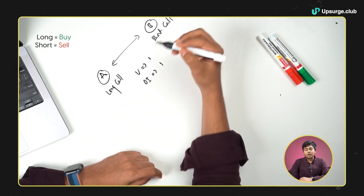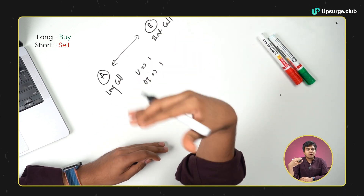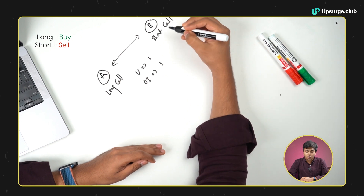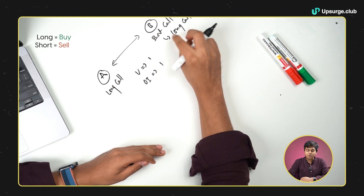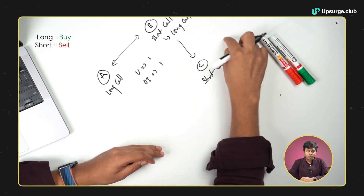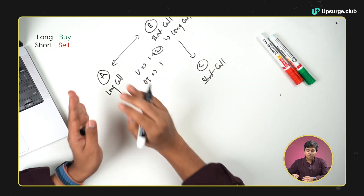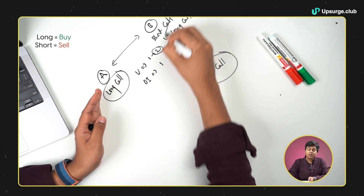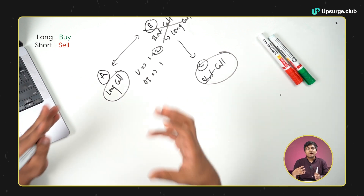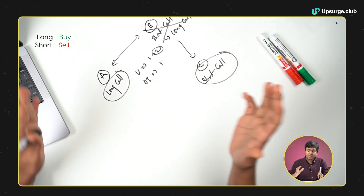Now say B initially had the notion that the particular index or stock price will fall, but later on he changed his opinion and now thinks the price will increase. So what he'll do is square off his short call position by taking a long call. His position is nullified, and to take a long call there has to be a person C who goes short call. One more trade has happened, so the volume increases from 1 to 2, but the open interest still remains 1, because there is still one person holding the long call position and one person holding the short call position. Party B does not hold anything. Volume is separate and open interest is separate — open interest is how many contracts are open at a given point in time.